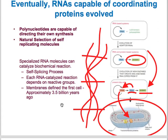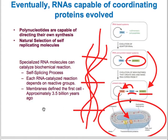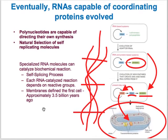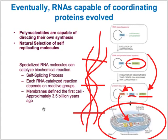We know the first cell happened only one time because there are universal features of cells — not different kinds of cells at the base level, about eight to ten characteristics depending on what you're counting. That's the story of RNA and how it played a massive role in the origin of life, at least as we can best hypothesize empirically.